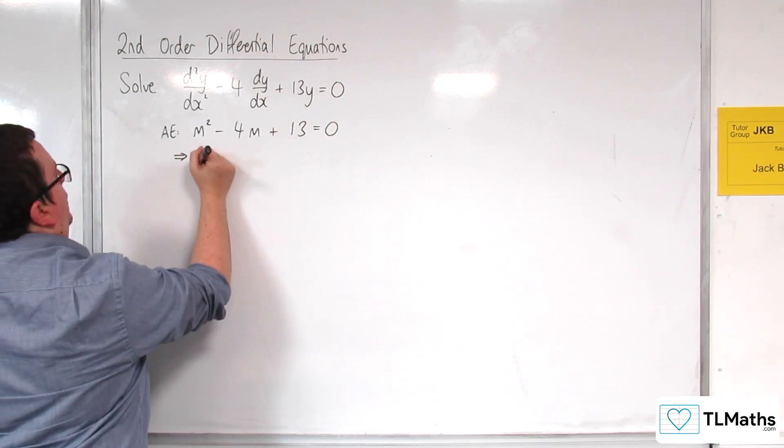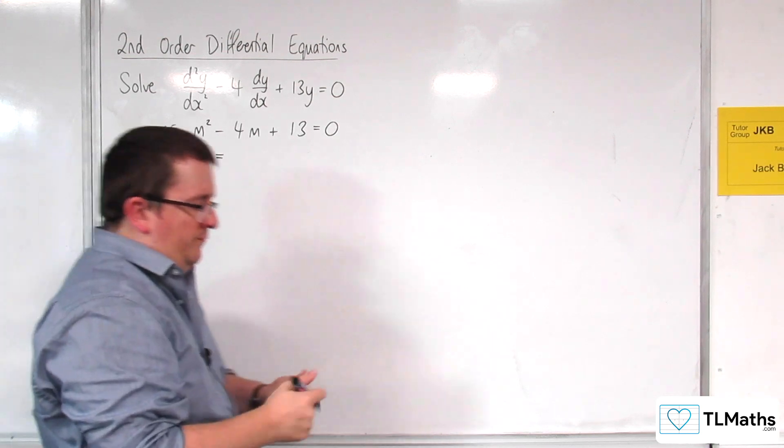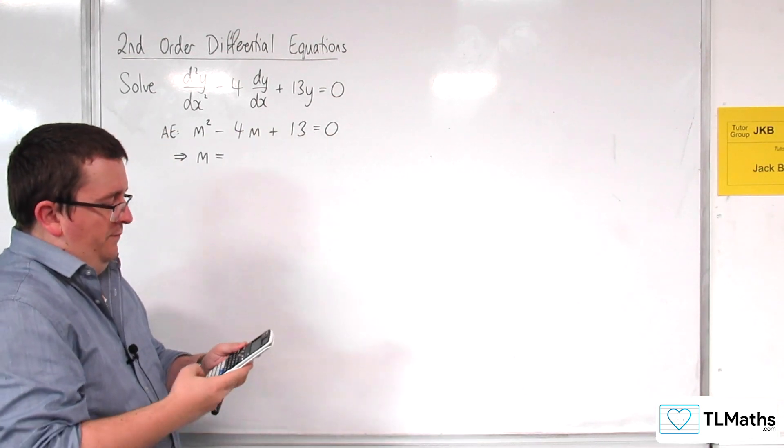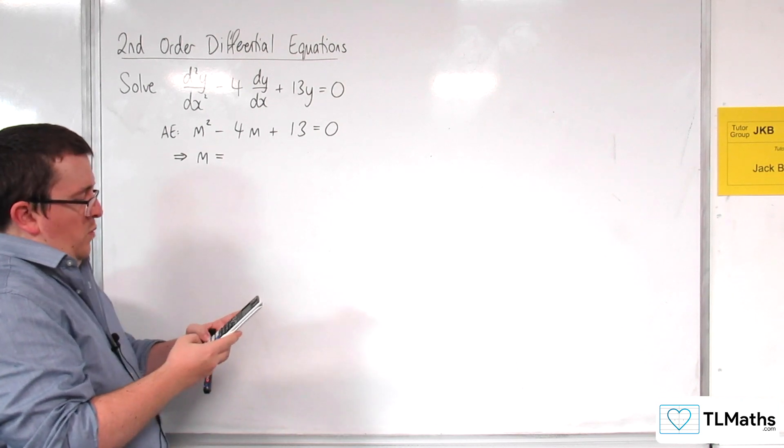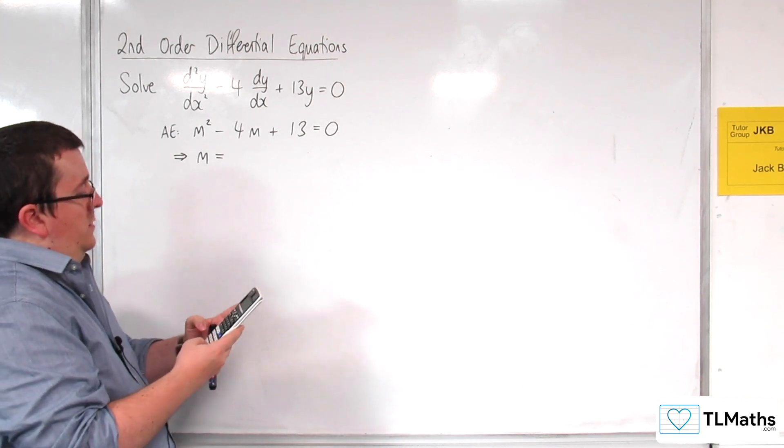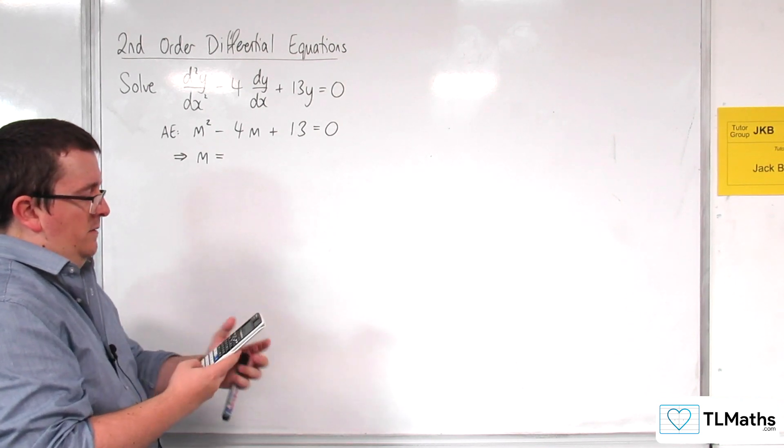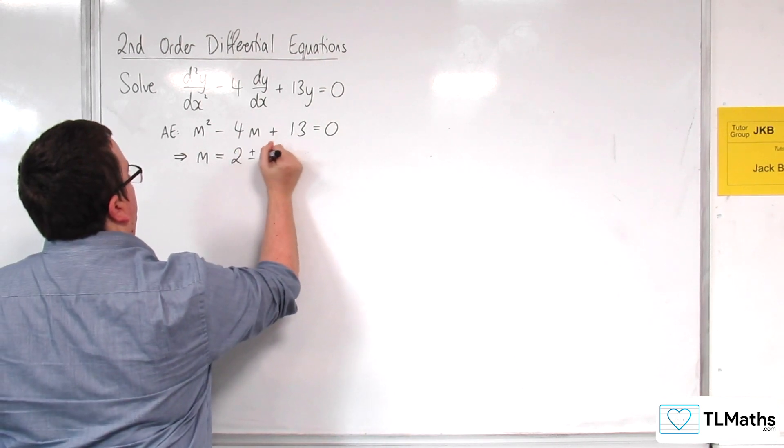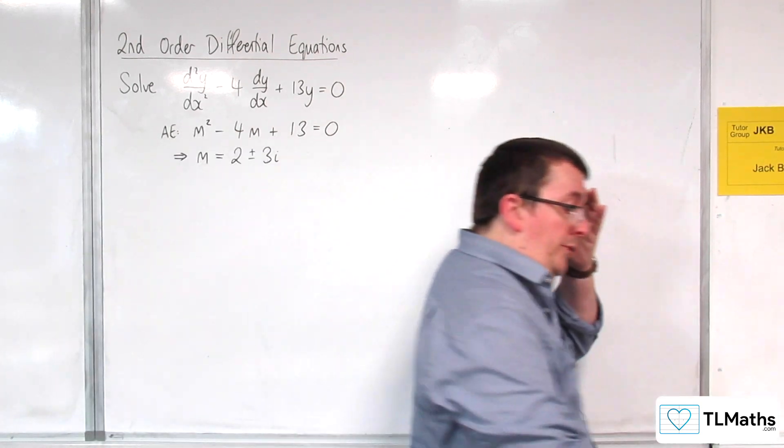So now I want to solve that quadratic equation. So I'm going to go to my quadratic solver. 1, 1, minus 4, and 13. So 2 plus or minus 3i. Okay, so we've got our complex roots.